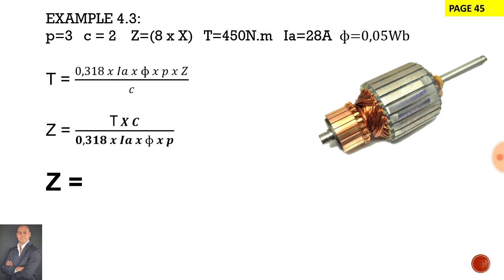Now to calculate the total number of armature conductors, the torque is 450 newton meters, it is wave wound therefore c equals 2, divided by 0.318, the armature current is 28 amps, the flux per pole is 0.05 Weber, and the number of pole pairs is 3.